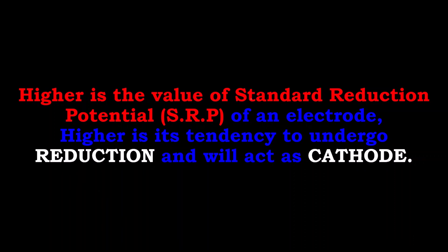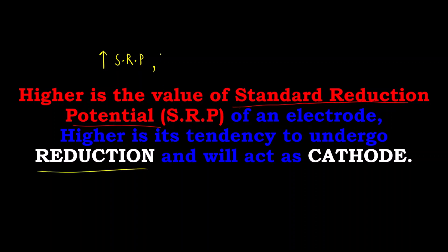The concept is: higher is the value of standard reduction potential, more is the tendency for an electrode to undergo reduction. So, more will be the standard reduction potential, more will be its tendency to undergo reduction — and reduction takes place at which electrode? It takes place at the cathode.